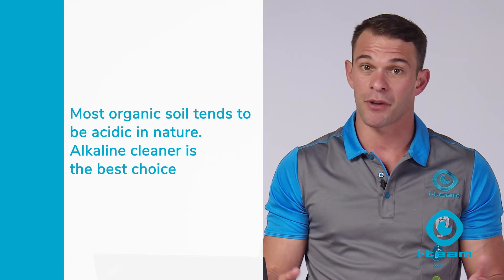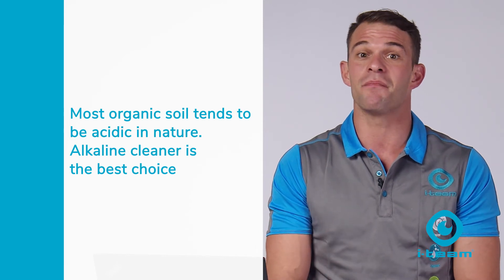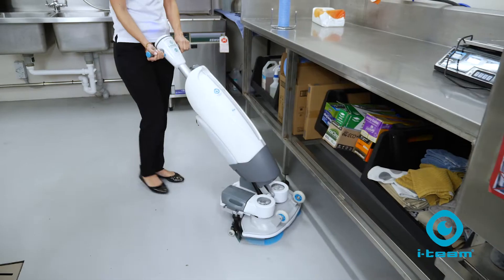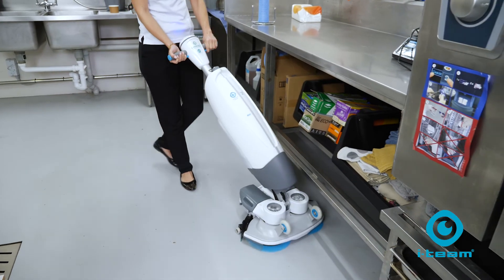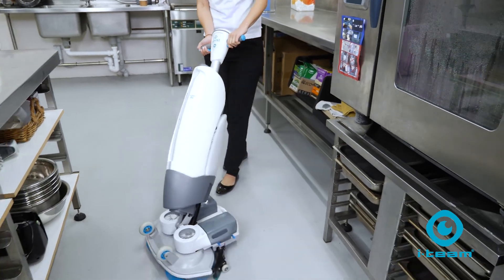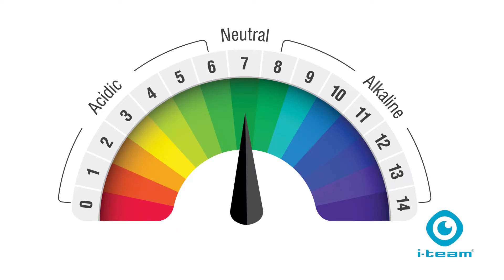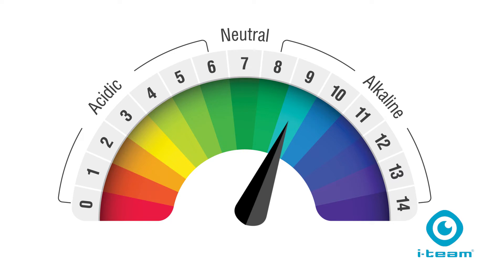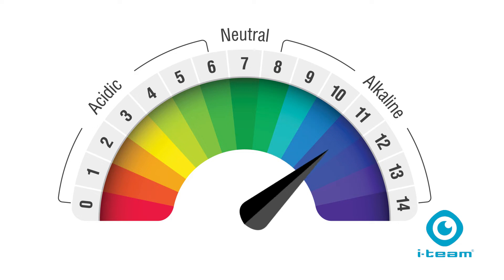How strong the chemical will need to be depends on the application. For example, for daily mopping in a kitchen area you can use a mild alkaline detergent with a pH of around 8 to 9. Whereas for a once-a-year deep clean in the same area, you might want to use a stronger product such as a heavy duty tile cleaner which could have a pH of 11 or even higher.